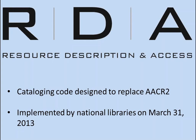RDA was implemented by the National Libraries at the end of March 2013, so we're just about coming up on three years now. The National Libraries meaning the Library of Congress, the National Agricultural Library, and the National Library of Medicine. The rules were published in 2010, then there was an evaluation period, and Library of Congress day one was March 31, 2013. If you are doing any copy cataloging and getting records from the Library of Congress, you already have RDA records in your catalog. Most libraries do probably about 90% copy cataloging, so you're an RDA library pretty much since 2013.